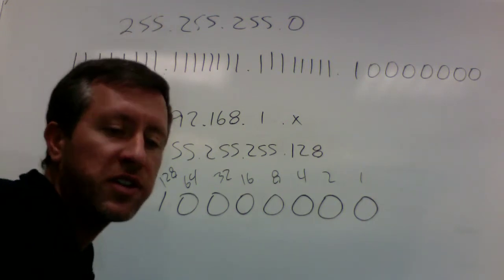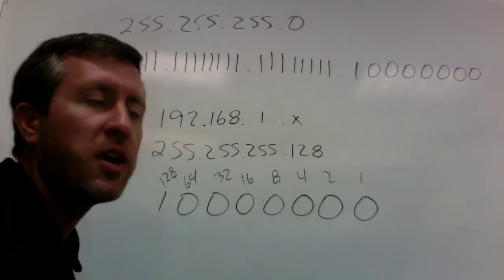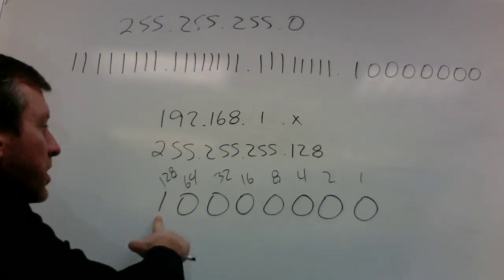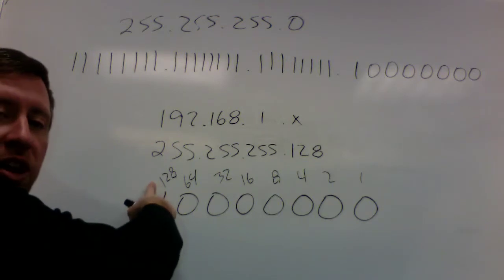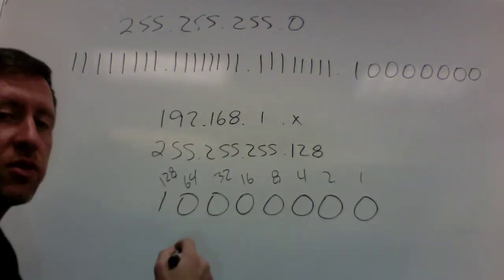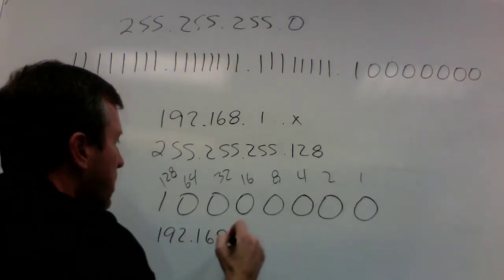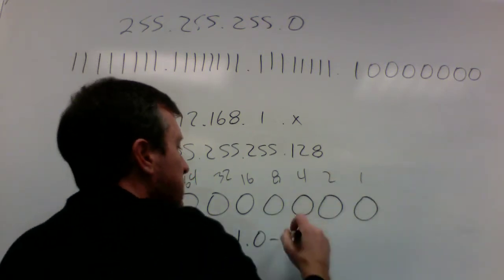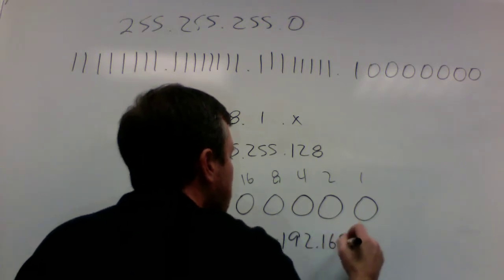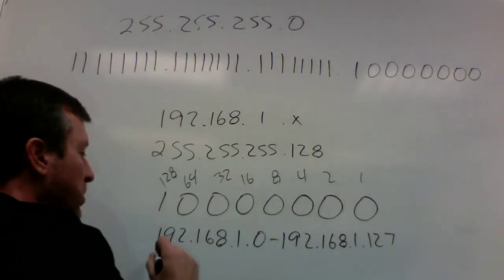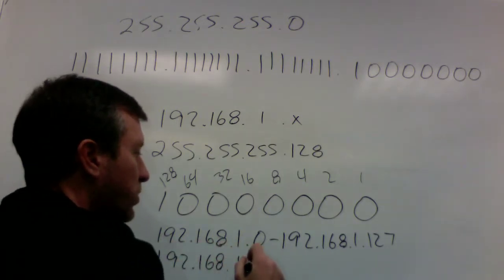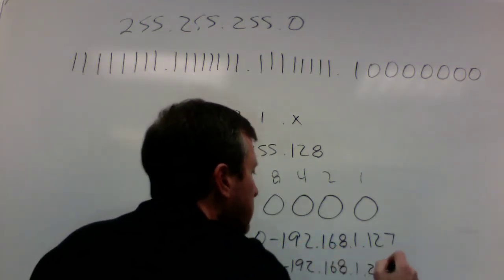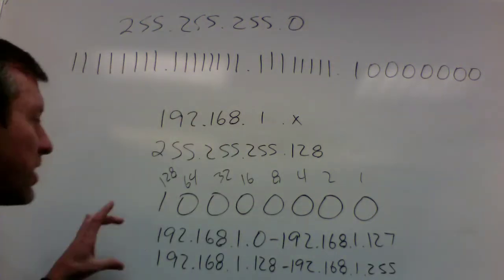So then you say, okay, well, how do I know how many networks that breaks it into and how many IP addresses it breaks it into? So there's a shortcut here. Essentially to find out how many IP addresses are in this range, I basically just have to look at the value of the last placeholder that's turned into a 1. So here I know that I have 128 total IP addresses per network. So this actually creates the ranges of 192.168.1.0 through 192.168.1.127, and then 192.168.1.128 through 192.168.1.255. So I know that that basically creates two networks.